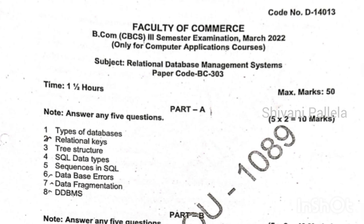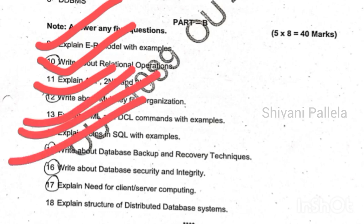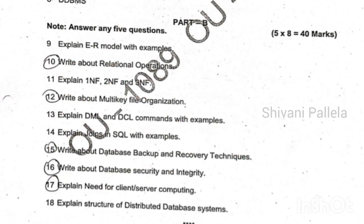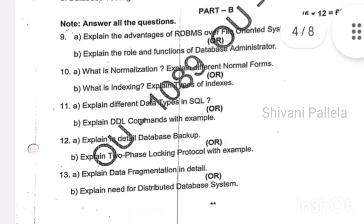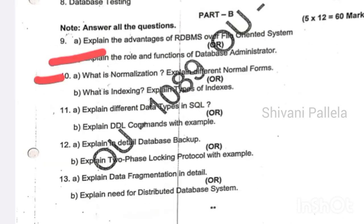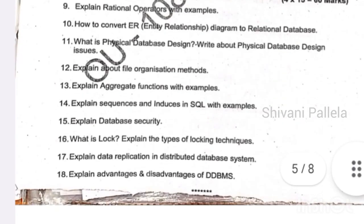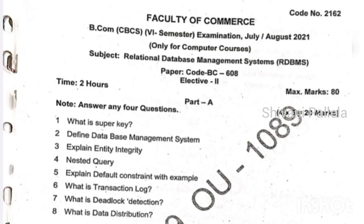This is the March 2022 paper. Topics here include ER model, relational operations, 1NF, 2NF, and 3NF, DML and DCL commands, joins concept, bank backup and recovery techniques, database integrity and security, client-server, and distributed database — all of which we have already discussed. Whatever the important questions I have given, you can score an O grade in this subject. Key repeating topics are normalization, roles and functions of the database administrator, DDL commands, database backup, and distributed database.